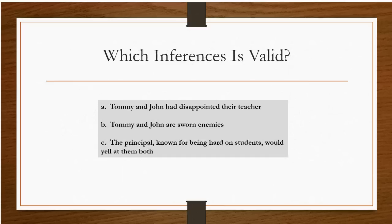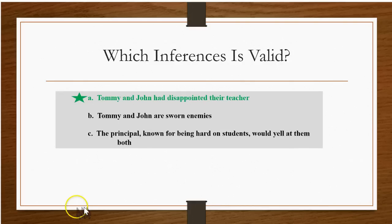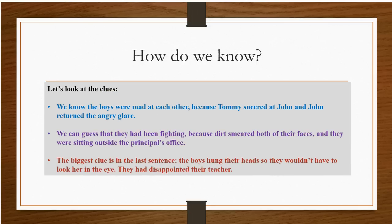We have to ask ourselves: which of these inferences is valid? A — Tommy and John had disappointed their teacher. B — Tommy and John are sworn enemies. Or C — the principal, known for being hard on students, would yell at them both. The answer is A: Tommy and John had disappointed their teacher.